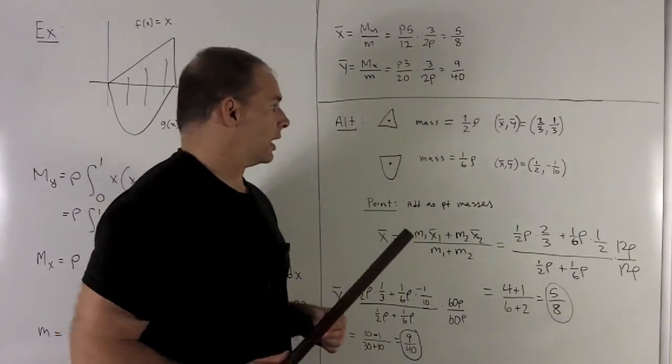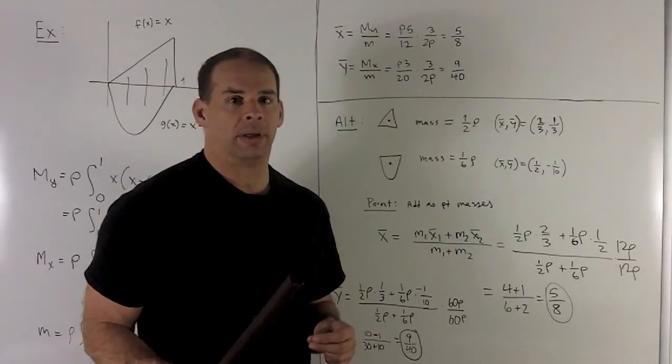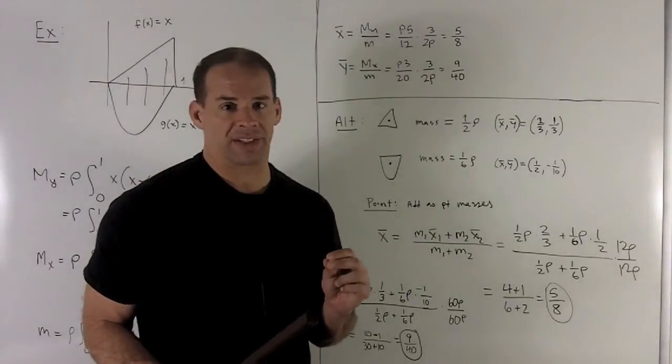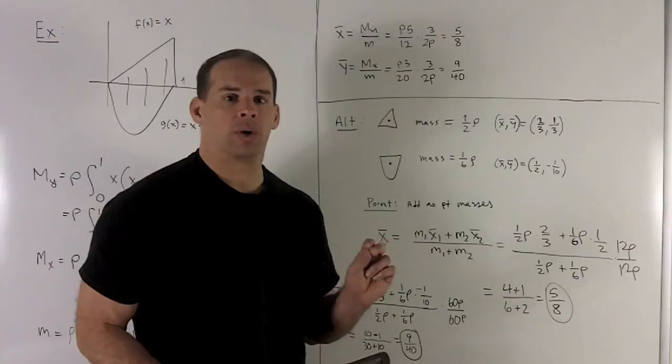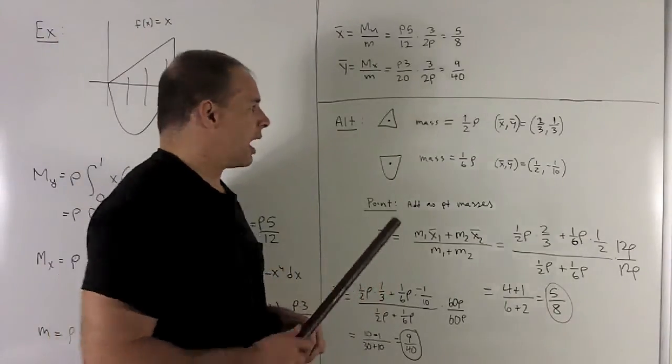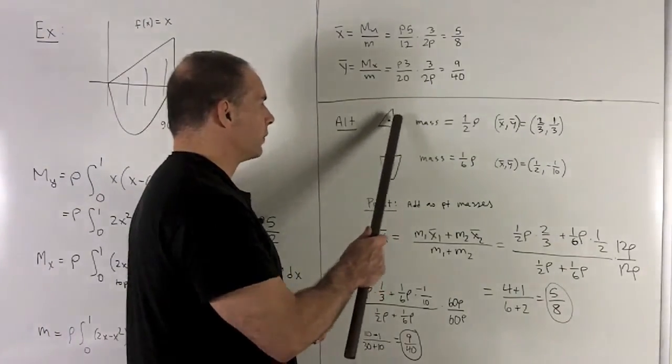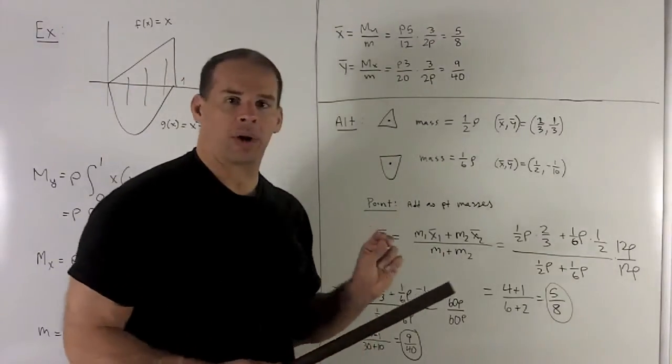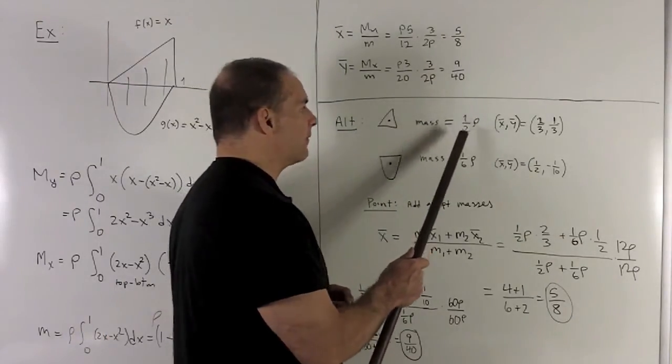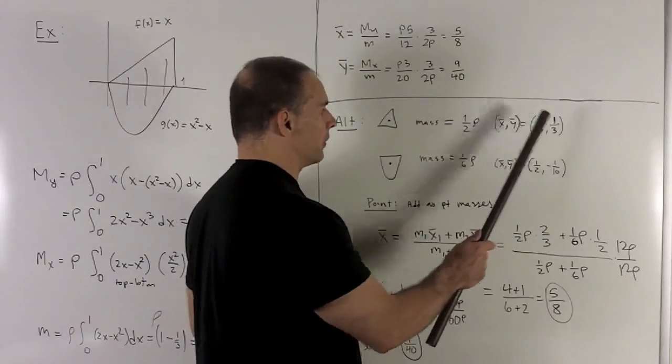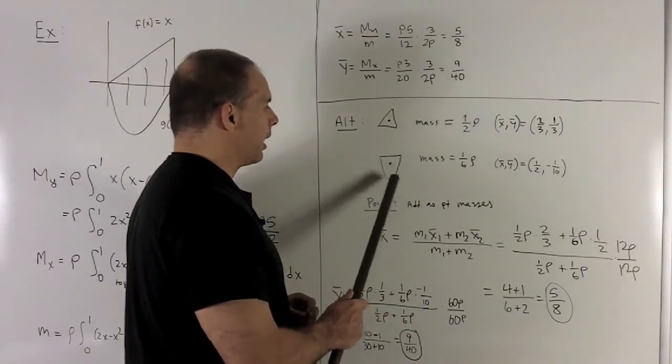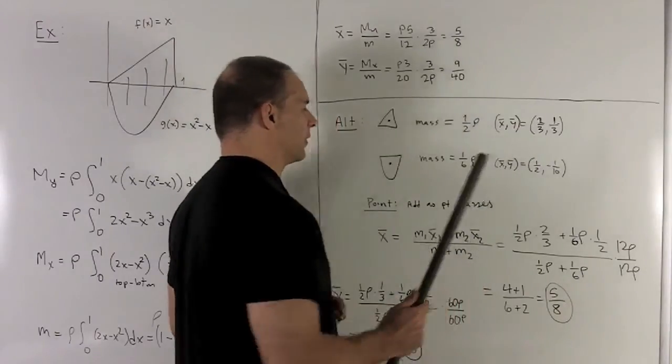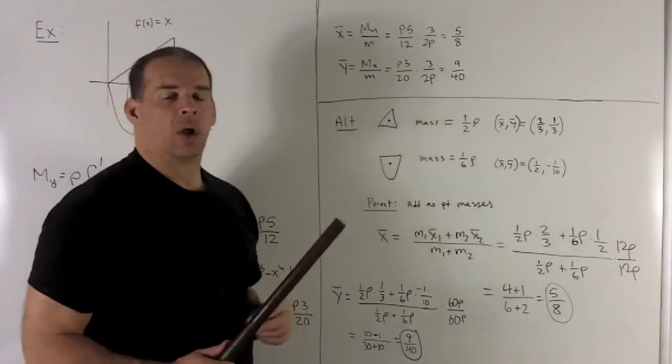Let's take a look at another way to do this problem, but it's going to be more illustrative of how you add two centers of mass together. So the idea is, suppose when I came to this problem, I already had the mass and center of mass for each region. So suppose I have each of these. The mass for the triangle will be a half, with center of mass at two-thirds, one-third. The mass of the parabolic piece will be one-sixth rho, and then the center of mass will be one-half minus a tenth.